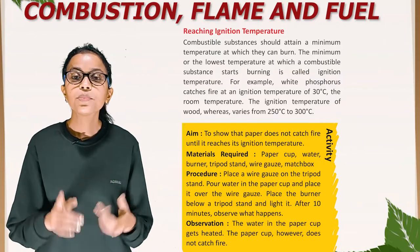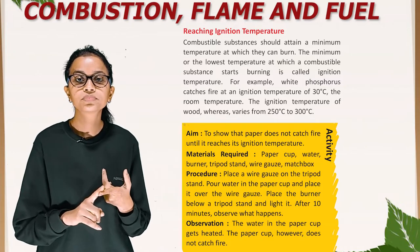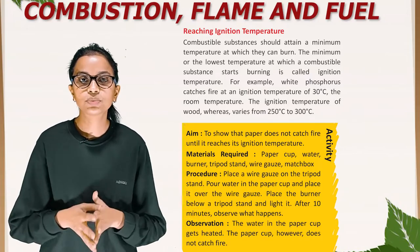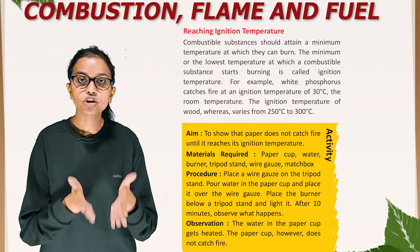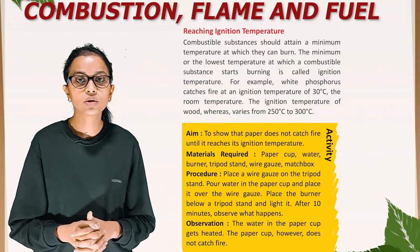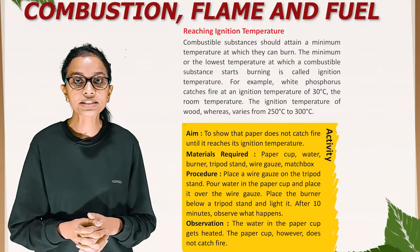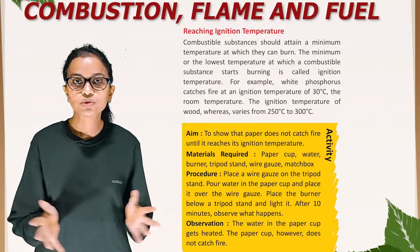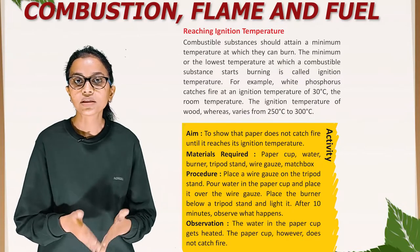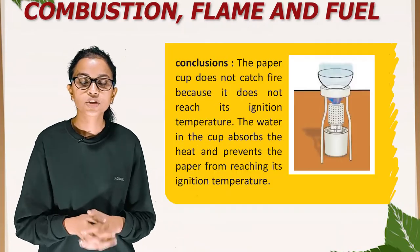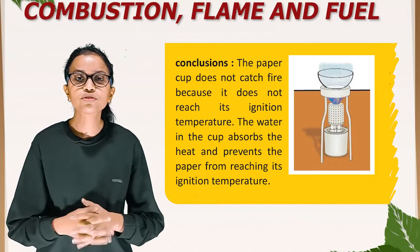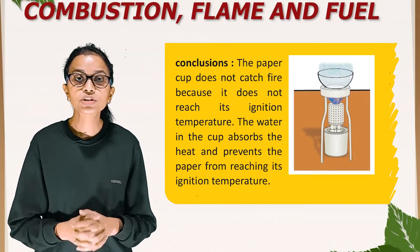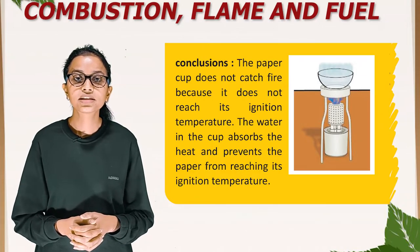Materials required: paper cup, water, burner, tripod stand, wire gauze, and matchbox. Procedure: Place a wire gauze on the tripod stand. Pour water in the paper cup and place it over the wire gauze. Place the burner below the tripod stand and light it. After 10 minutes, observe what happens. Observation: The water in the paper cup gets heated, but the paper cup does not catch fire. Conclusion: The paper does not catch fire because it does not reach its ignition temperature. The water in the cup absorbs the heat and prevents the paper from reaching its ignition temperature.